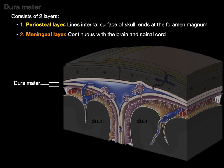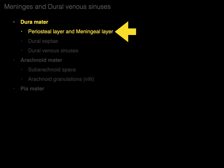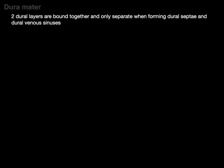There's our dura mater with layer one along the internal surface of the skull — it's basically the periosteum on the inside of the skull and it ends at the foramen magnum. The second layer of the dura mater, shown here in orange, is the one that's going to be continuous with the brain and all the way down the spinal cord. The two dural layers are bound together and only separate when they form dural septae or dural venous sinuses.